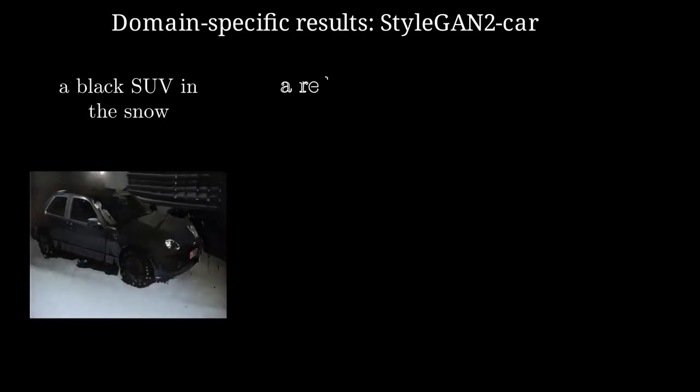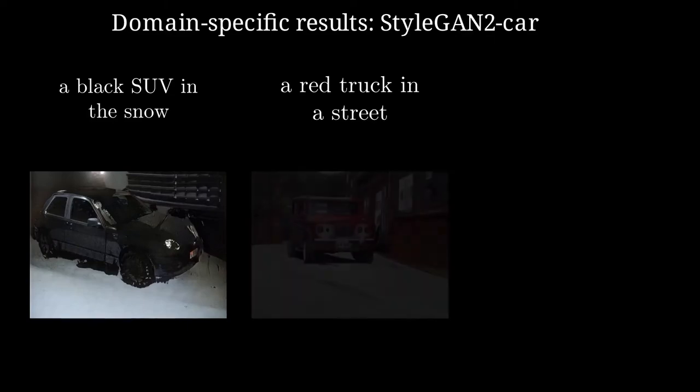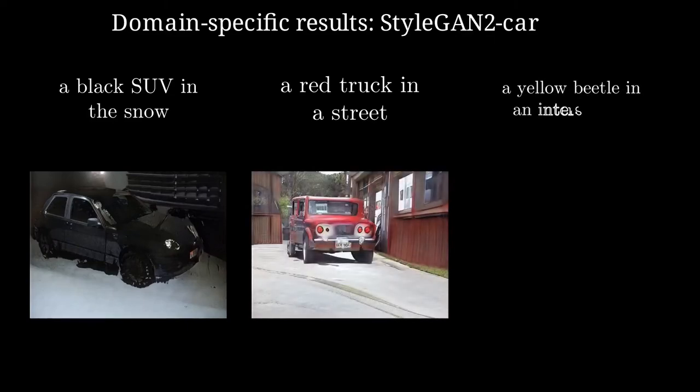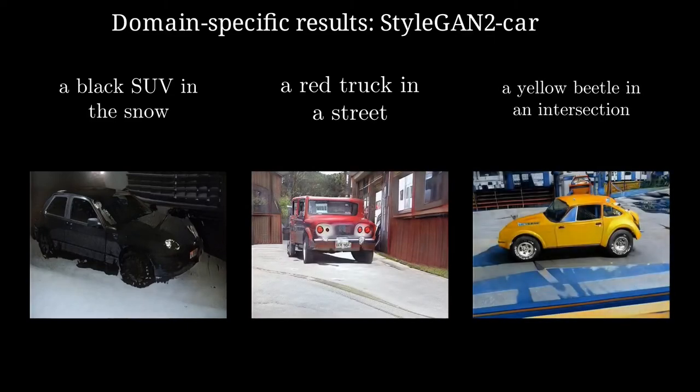These are the results for the domain-specific target text using StyleGAN2 Car. Even in this case, CLIP Glass is able to generate the corresponding images even if some artifacts are present.